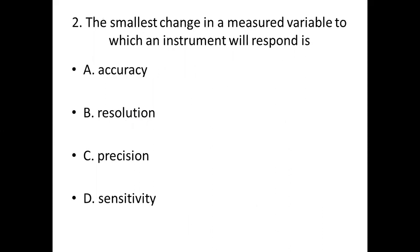Second bit. The smallest change in a measured variable to which an instrument will respond is: Option A, accuracy; Option B, resolution; Option C, precision; Option D, sensitivity.